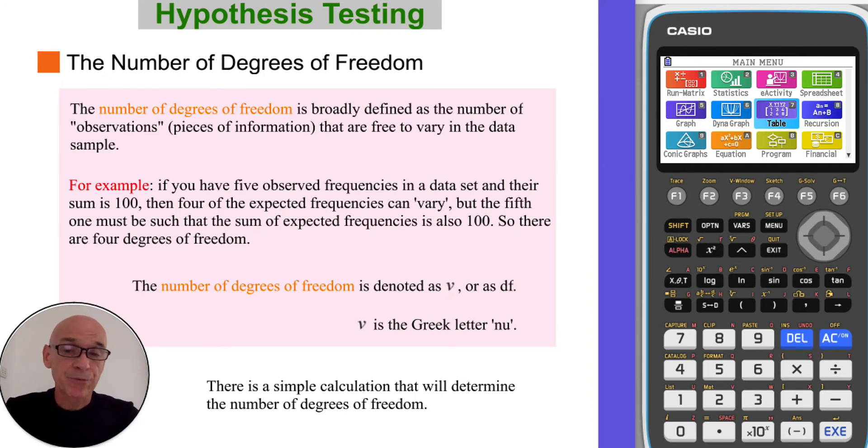The number of degrees of freedom is broadly defined as the number of observation or pieces of information that are free to vary in the data sample. For example, if you have 5 observed frequencies in a data sample and their sum of those frequencies are 100, then when you're calculating the expected frequencies, 4 of those frequencies can vary, but the 5th one is such that the sum of those frequencies has to also equal 100. So there are 4 degrees of freedom in that example.